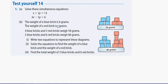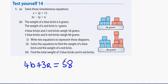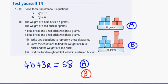The weight of the blue blocks is b grams and the weight of the red blocks is r grams. Four blue bricks and 3 red bricks weighs 58 grams, so the first equation is 4b plus 3r equals 58. The second equation represents the other diagram: 5 blue plus 6 red equals 86.